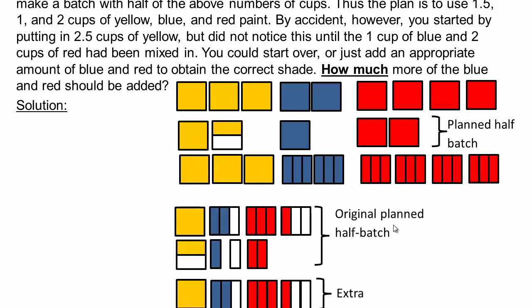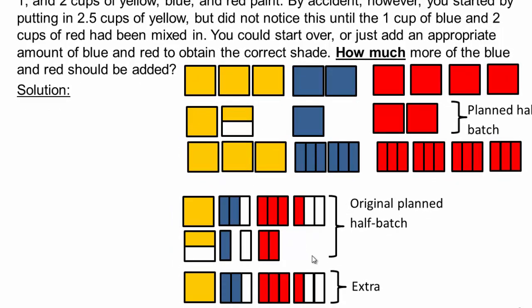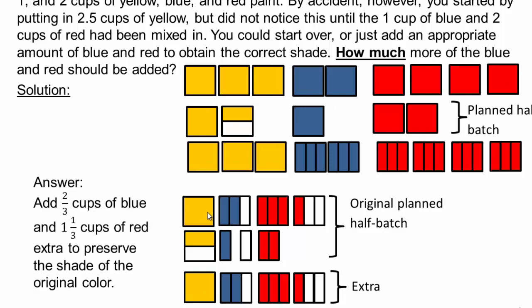Alright. So we originally planned for half a batch, which was this much amount. But then we have, instead of one and a half, we have two and a half cups of yellow. So two and a half cups of yellow. So for this excess cup of yellow, we need to add two thirds cup of blue and four thirds cup of red. That's what we have to add extra. So you can see how visually this will be the answer then. So add two thirds cup of blue and one and one third cup of red, which is same as four thirds. That will preserve the shade and you don't have to start over.